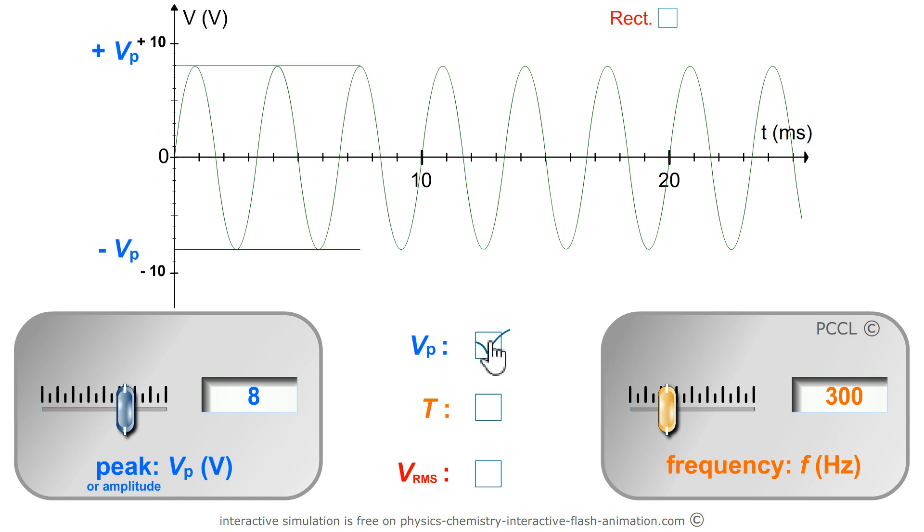V-peak, or peak, often noted VP, is 8V here. We will say that the voltage varies between plus VP and minus VP.